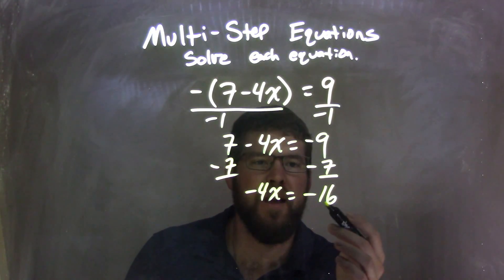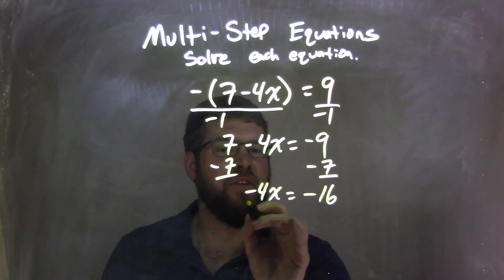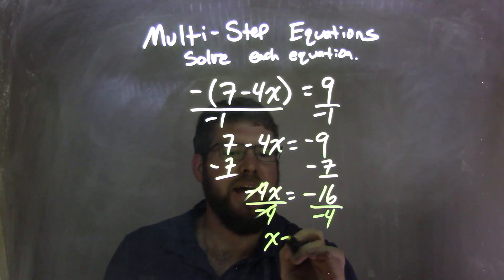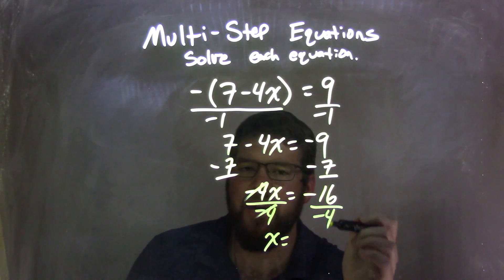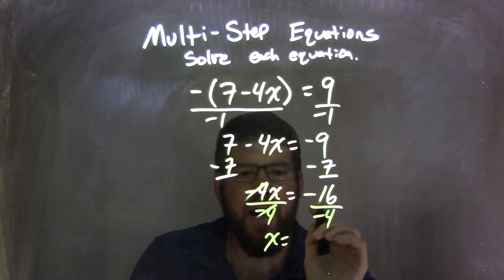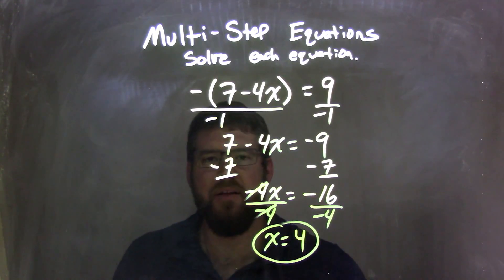Negative 4x equals negative 16. To solve, I'm going to divide by negative 4. Remember, the negative 4s will cancel, and a negative divided by a negative is a positive. So negative 16 divided by negative 4 is positive 4, and that is my final answer.